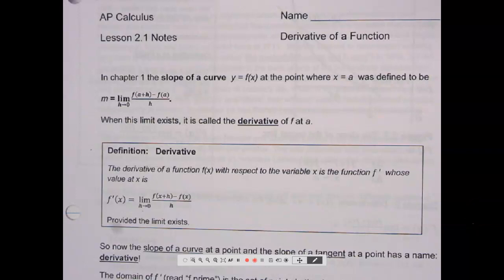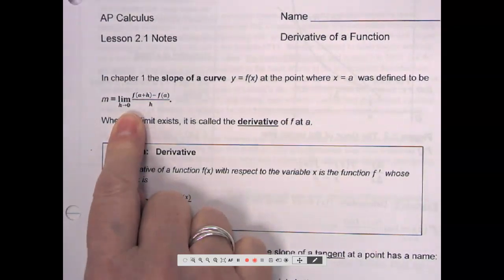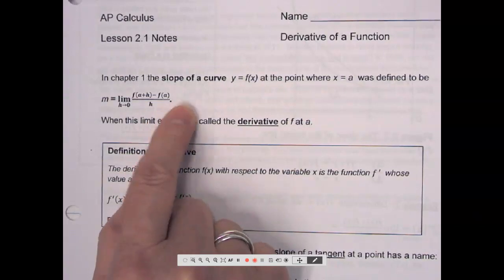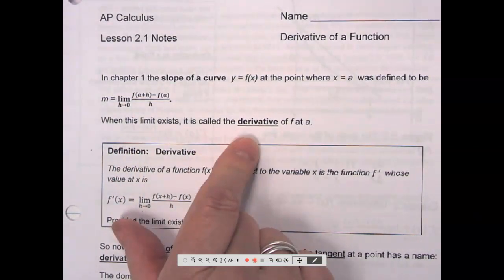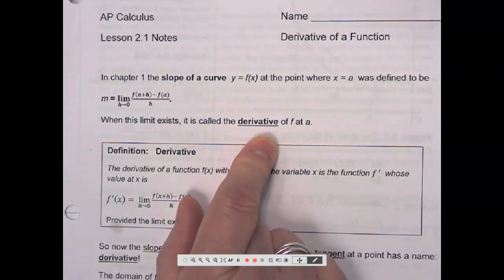In chapter 1, the slope of a curve y equals f of x at the point where x equals a was defined to be this thing that you did on the test a couple times yesterday. When this limit exists, when I end up getting a number there like you did yesterday, that number is called the derivative of the function at that point.